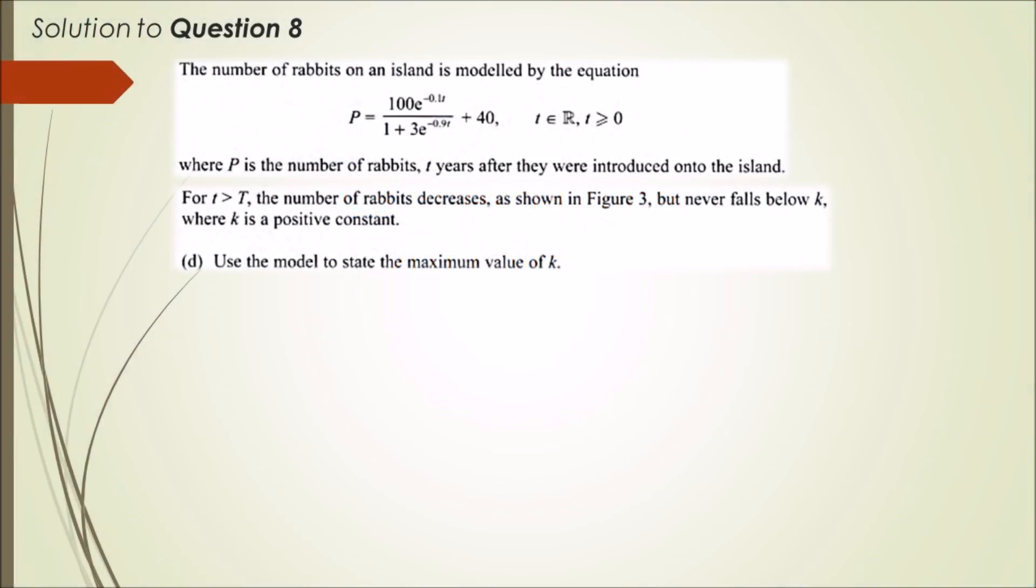So it's saying use the model to state the maximum value of k. We know that as time progresses, after capital T is the maximum value of t, the number of rabbits decreases to k.